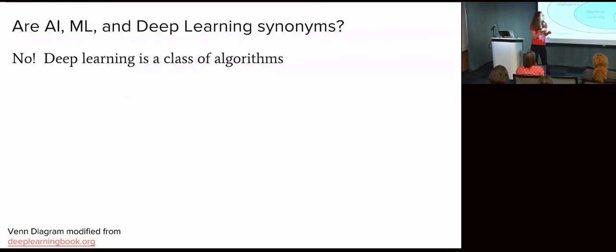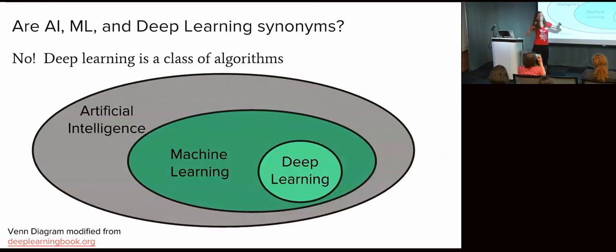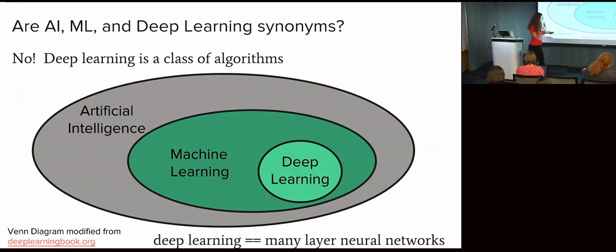So broadly, artificial intelligence is a broad field. Machine learning is a very interesting and large subfield of that. And deep learning is just one class of awesome algorithms, also known as multi-layer neural networks.